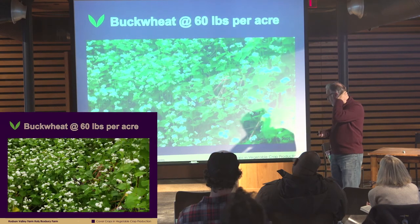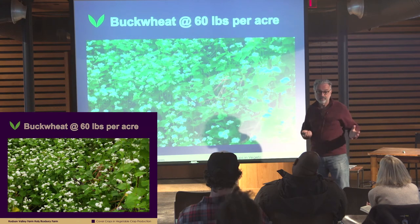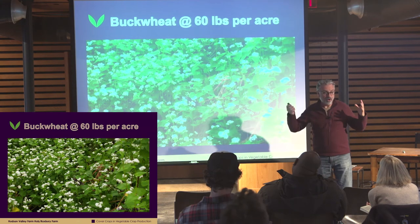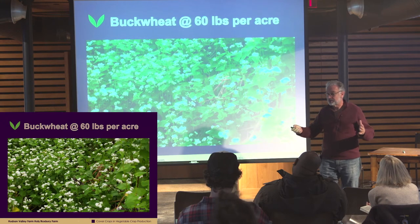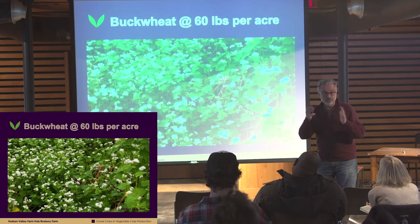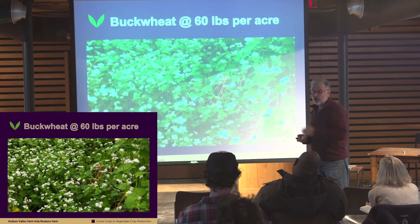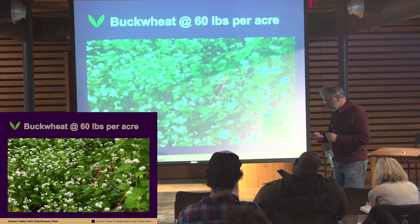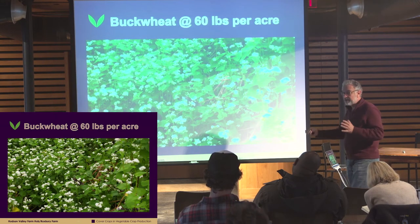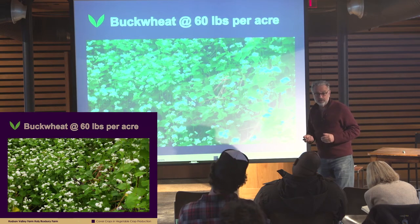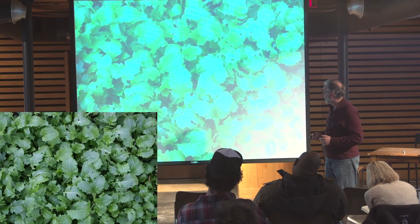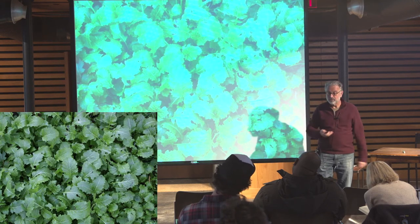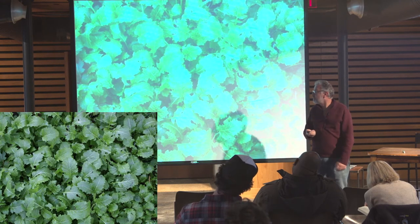Buckwheat — it's a great crop when you have an opening in your rotation. Say you're growing spring lettuce, grow some buckwheat over the summer, and follow with spinach or fall arugula later on. You basically have three crops in that area. Let's now talk quickly about mustard, because I want to move on to reduced tillage.